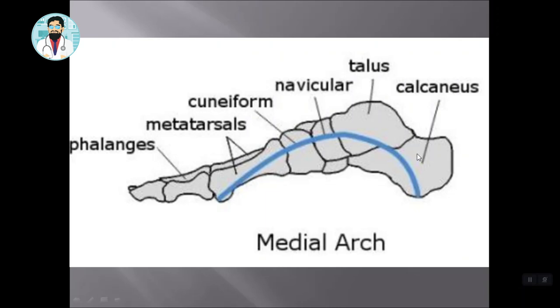So in total, there are about 9 bones: 1 Calcaneum, 2 Talus, 3 Navicular, then 3 Cuneiform bones — that is 6 — and then 3 Metatarsals. These 9 bones form the Medial Longitudinal Arch.